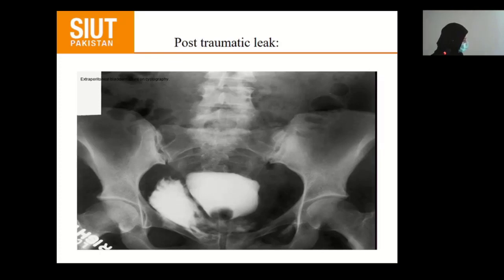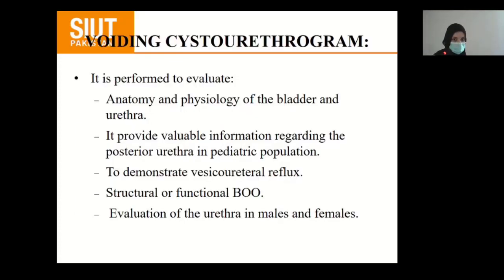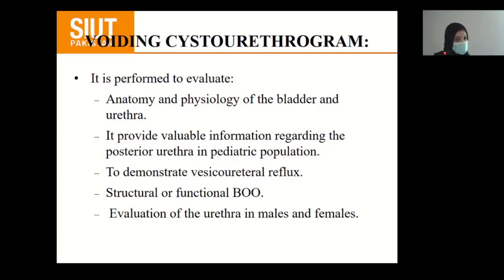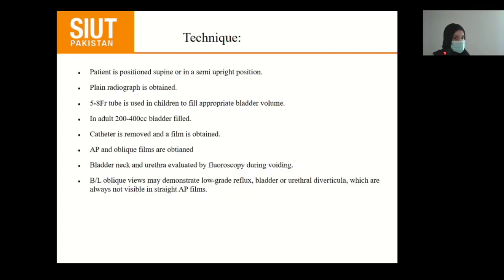The connection between the bladder and vagina is shown on the contrast study — this is a vesicovaginal fistula. Another image shows a post-surgical anastomotic leak in a patient who underwent robotic prostatectomy, where the contrast cystogram demonstrates contrast extravasation. In a patient with a history of abdominal trauma, the cystogram shows extraperitoneal extravasation of contrast indicating bladder rupture.